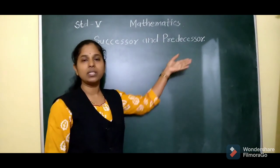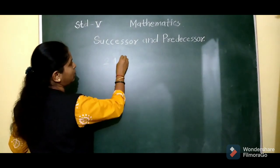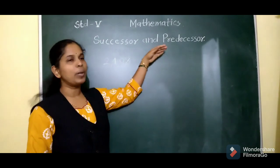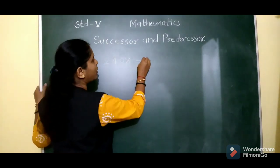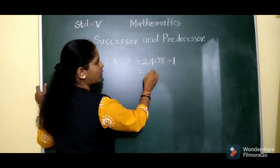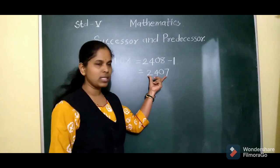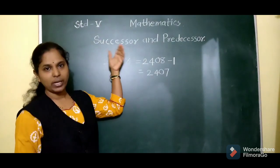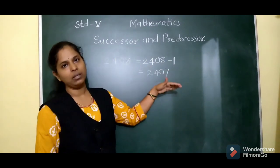What is predecessor? Predecessor means previous number — the number before. To find out the predecessor, we have to subtract 1 from the given number. For example, 8 minus 1 is 7, so 2407 is the predecessor of 2408. So in summary: while finding out the successor, we add 1 in the given number, and while finding out the predecessor, we subtract 1 from the given number.